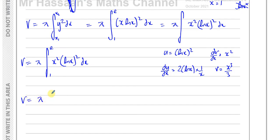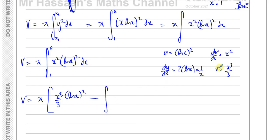Don't forget the pi. Applying integration by parts: u times v gives x cubed over 3 times (ln x) squared, minus the integral of v times du/dx. Multiplying those together gives 2 thirds, and then I have ln x times 1 over x times x cubed — so x cubed and x cancel to give x squared — times ln x dx, with limits e and 1.